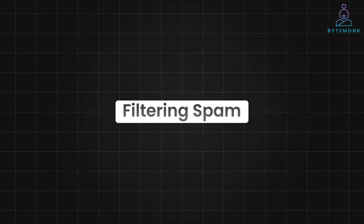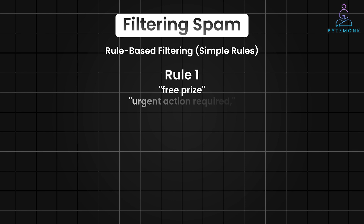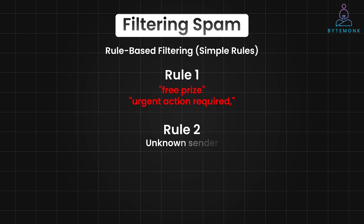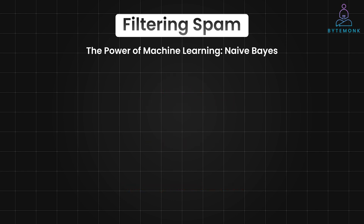Let's break down how we can build an email spam filter like a software engineer would. One approach to spam filtering is to use simple handcrafted rules. Rule one: if the email contains phrases like 'free prize' or 'urgent action required', mark it as spam. Or if the email is from an unknown sender, or has lots of typos or grammatical errors, mark it as spam. This approach is simple, but it has drawbacks — spammers can easily adapt to these rules and genuine emails might get caught in the filter. Machine learning offers a more sophisticated, adaptable solution: the Naive Bayes algorithm, which excels at text classification tasks like spam filtering.